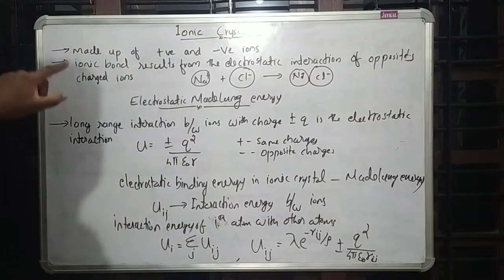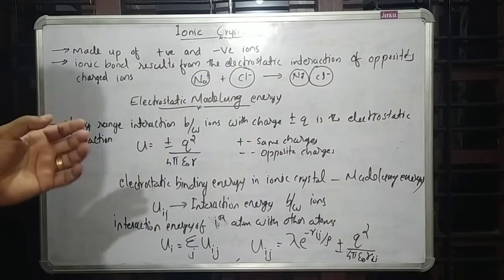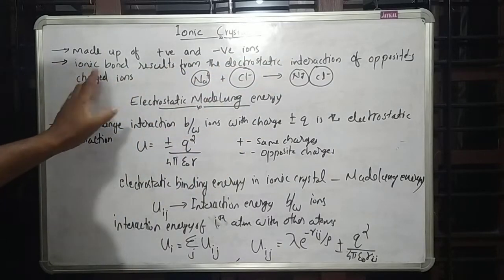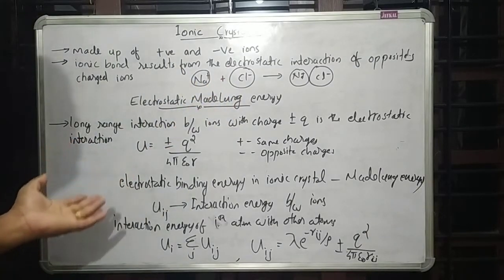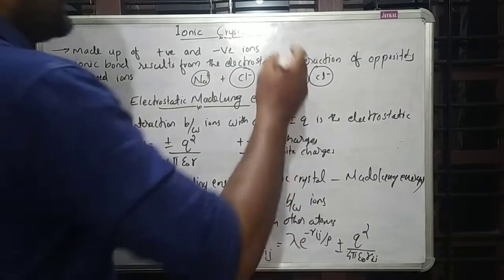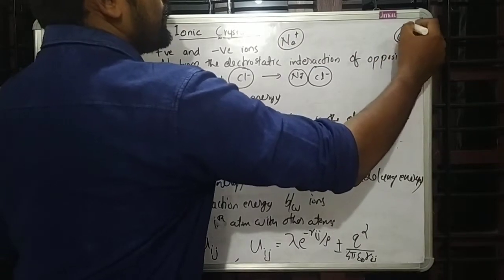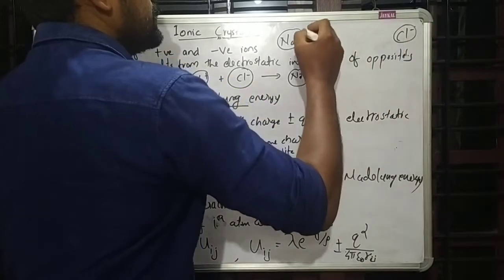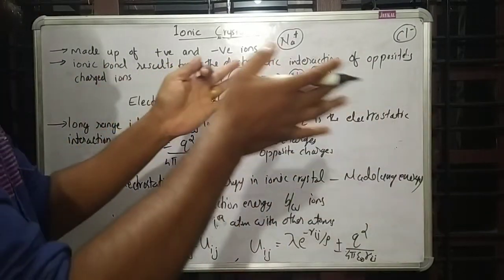Let us discuss ionic crystals. Ionic crystals are made up of positive and negative ions. For example, sodium chloride is formed by Na⁺ and Cl⁻ ions. An ionic bond results from the electrostatic interaction between positively and negatively charged ions. If we place Na⁺ here and Cl⁻ at a particular distance apart, each will feel the other as a point charge, and they will attract due to electrostatic interaction.